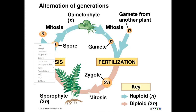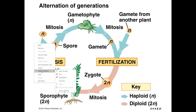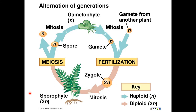Welcome back. Let's talk about the alternation of generations — this idea of a succession of multicellular haploid and diploid phases. Although this isn't unique to land plants, it is a defining feature of land plants, something that they all have. So they all do this alternation of generations.